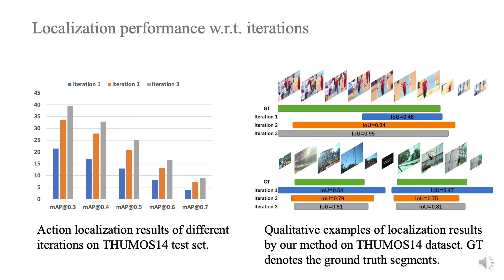Since the quality of the pseudo-labels improves with the number of iterations, our action localization model can learn more precise attention weights. So the performance of temporal action localization can be improved by a non-trivial margin. We also visualize the action localization results of different iterations.